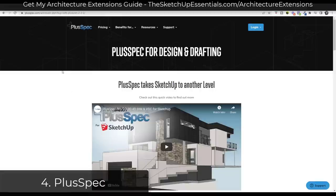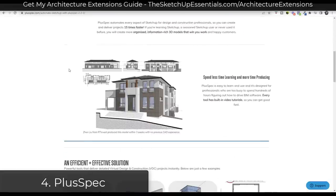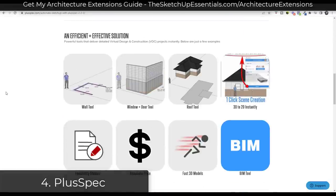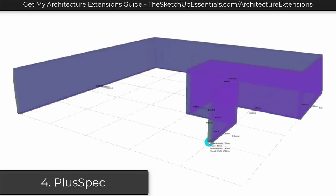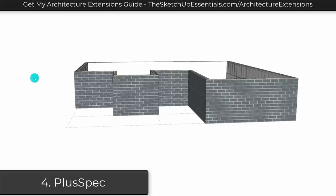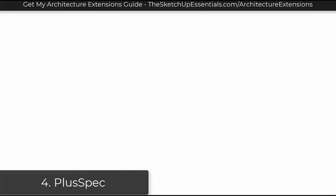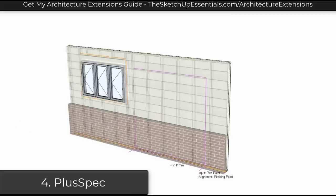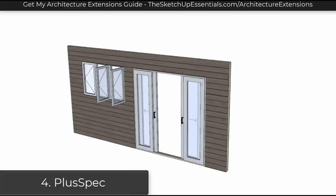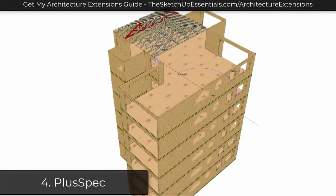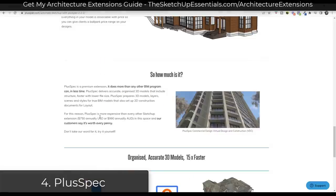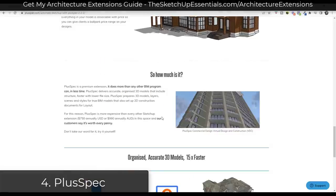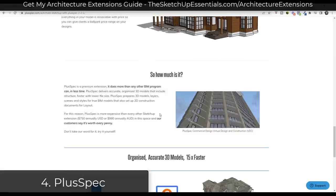Next up we have PlusSpec. PlusSpec is basically a tool for SketchUp that adds as close to BIM functionality as you can get. It has smart tools for adding different walls, doors, and windows as smart assemblies where you can toggle material types. It also automates the plan creation process — you click a button and it automatically generates scenes you can send to Layout to generate those plans. It's targeted at professionals at $750 a year, but it does have a free trial.